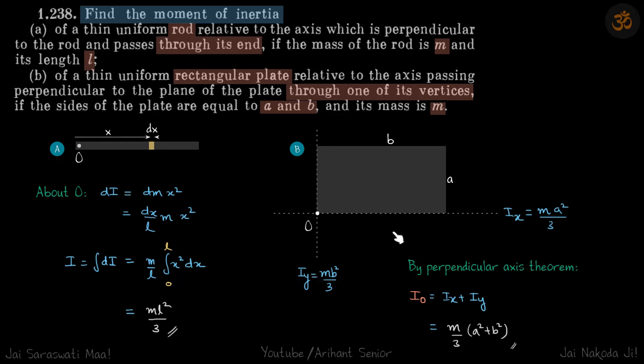If we take the axis of rotation to be this, then the uniform rod's length is a about this axis. So moment of inertia about this axis Ix is equal to m a square by three.